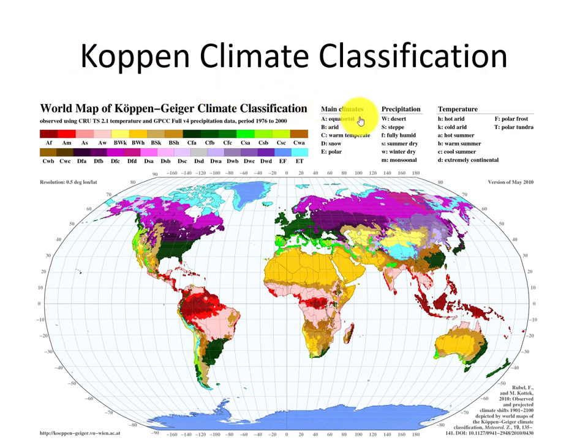The system is divided into main climates. This resource lists five main climates, and your lab manual also includes a sixth. There's equatorial, classified by the letter A; B is arid; C is warm temperate; D is snow; and E is polar. You will also see H, which is highland, in your lab manual.